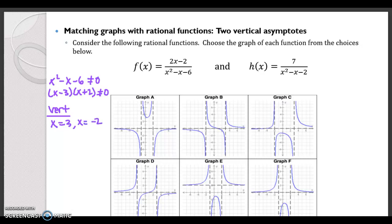Where does that happen? x equals 3 and x equals negative 2. Well, that happens at graph B and C and D and that looks like that's it. So those are our three options so far.